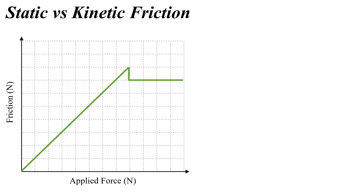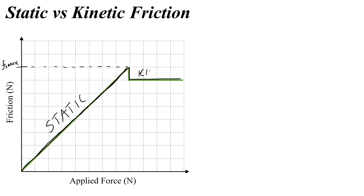Here we have a graph of friction versus applied force, and in the first part of the graph you'll notice that the friction and the applied force are equal. This occurs when the object is stuck to a surface, and we call this the static friction region. Eventually you'll push so hard that you reach the point we call the maximum static friction, or FSmax. As soon as you push with that peak amount of force the object will begin to move, and the force of friction will decrease slightly to a constant value that we call the kinetic friction. So this region represents the kinetic force of friction.